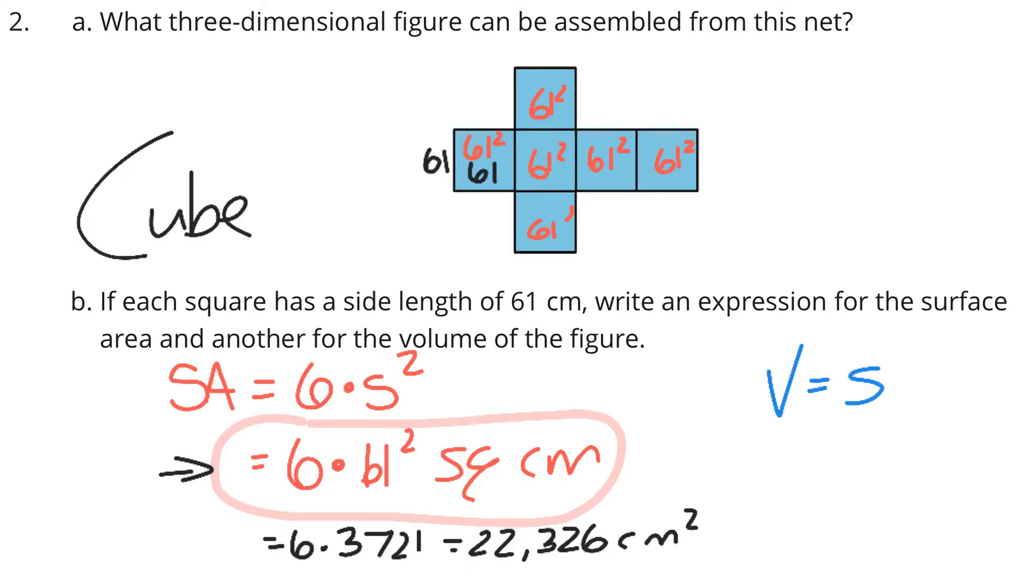Now, volume is equal to that edge length to the third power. In other words, 61 to the third cubic centimeters.